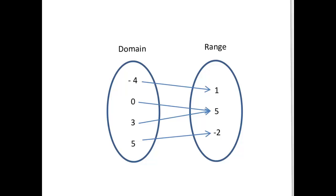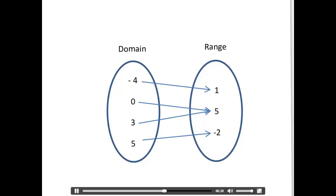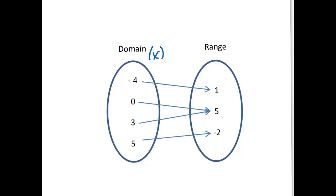Here's another example called a map. One side is the domain — the x-values — and the other side is the range — the y-values. It shows that -4 maps to 1 (one output), 0 maps to 5 (one output), 3 also maps to 5 — that's fine, it doesn't matter that 5 appears twice, we just need one output per input. And 5 maps to -2. Everything here looks good, so this is also a function.